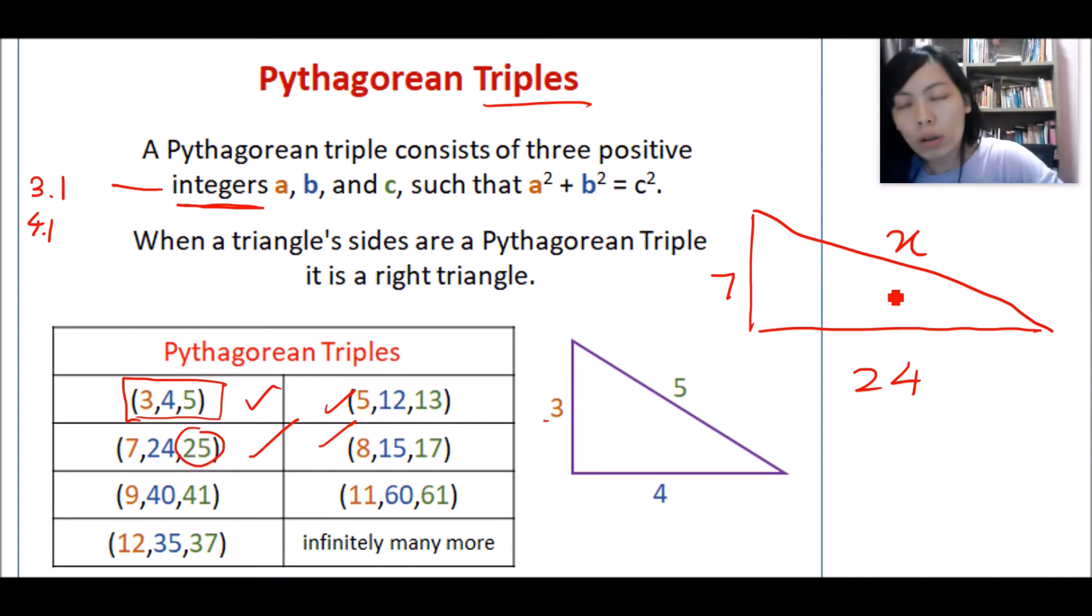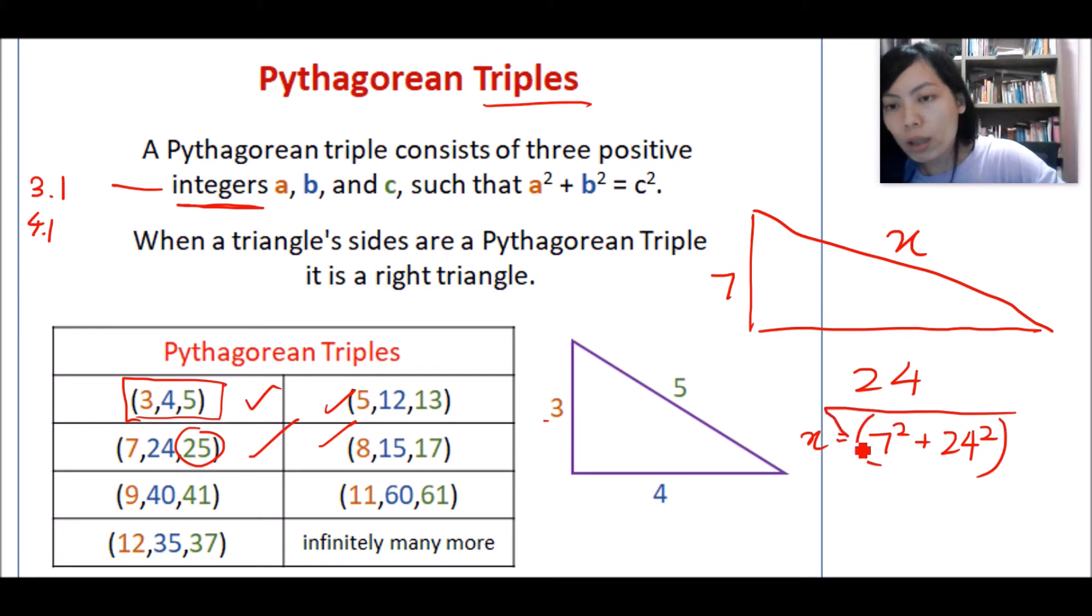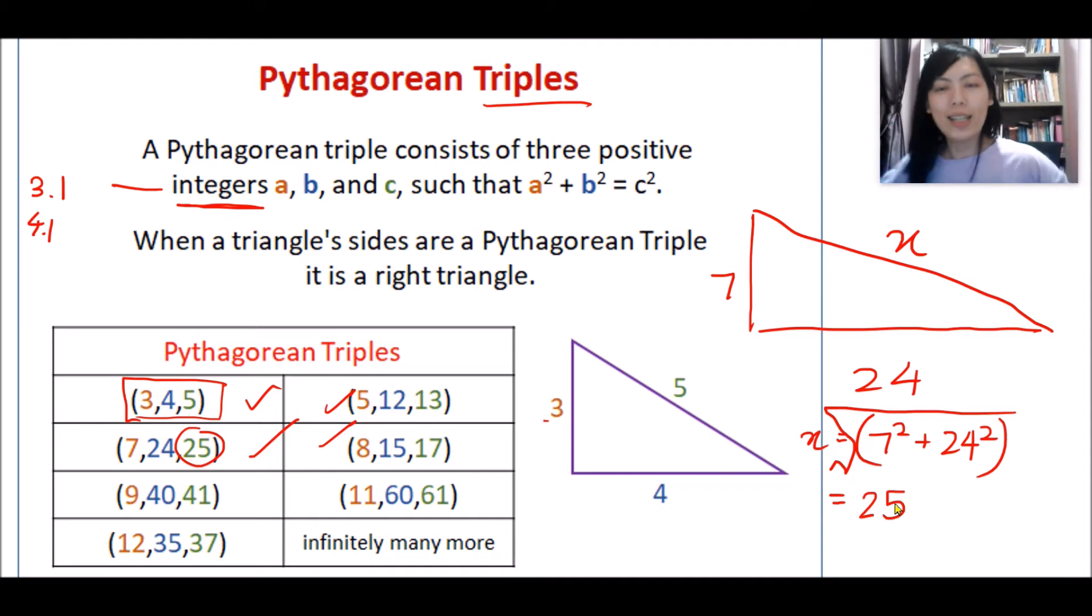Or if you insist to use a calculator, you will still manage to find it. X equals the square root of 7 squared plus 24 squared, and you will still manage to get 25.